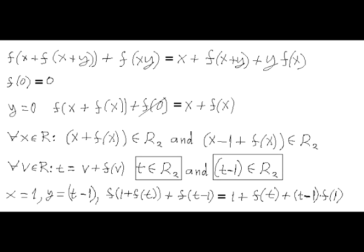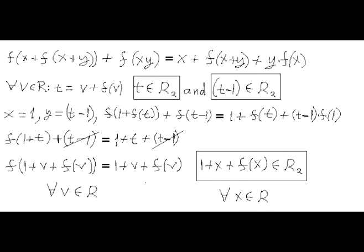If we denote by t, v plus f of v for any real number v, then t and t minus 1 are fixed points for function f. Now let's plug in number 1 for x and t minus 1 for y. Since both t and t minus 1 are fixed points for function f, we can replace f of t with t and f of t minus 1 with t minus 1. And that simplifies our functional equation to the format in which we obtain yet another type of a fixed point, value of function f of any real number v plus v plus 1.